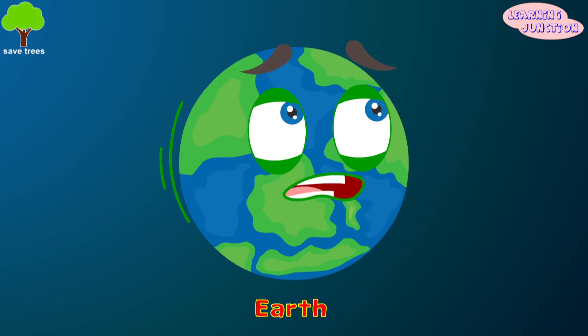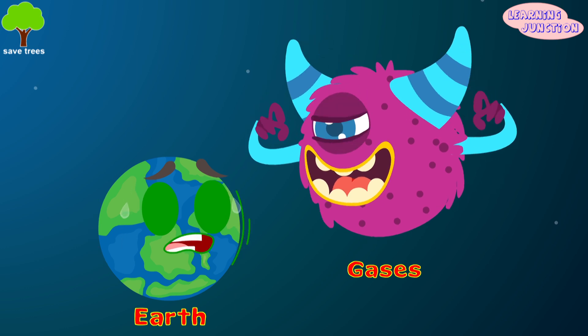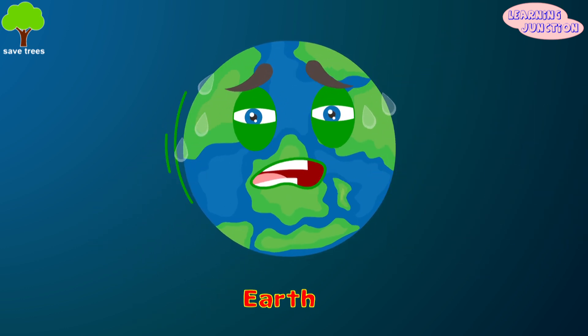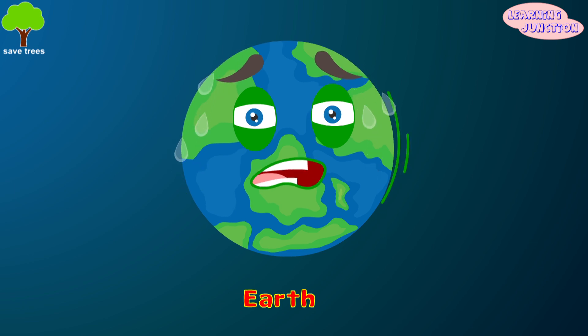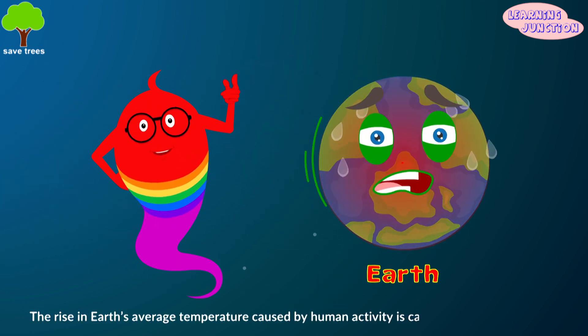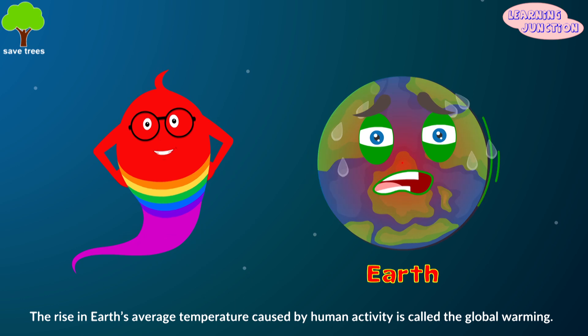All of these human activities add extra greenhouse gases to the atmosphere. As the level of these gases rises, so does the temperature of Earth. The rise of Earth's average temperature caused by human activity is called global warming.